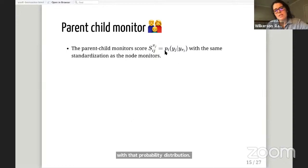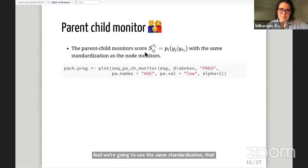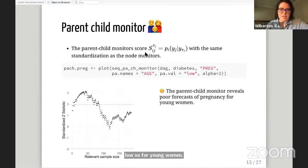The next monitor goes down another level to figure out what's really happening with that probability distribution. It's called the parent-child monitor. This uses the same log score except we add this extra parameter pi_j, a specific set of values of the parent node. We're going to dig further into what's happening with that node for pregnancy, specifically looking at age where age is low. For young women, what's going on? Sure enough, our monitors reveal that there's specifically poor forecasts of pregnancy for young women. That might tell us to go back to the study authors and investigate what's happening with young women because this part of our model isn't predicted very well.